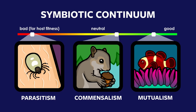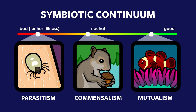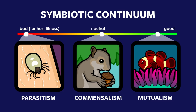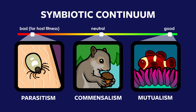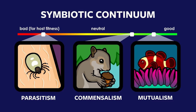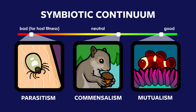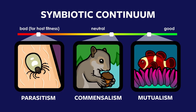It might seem silly that biologists invented a word — symbiosis — to encompass everything from parasites to cooperators, but the reason for this is that parasites can evolve to become cooperators, and vice versa. Understanding these evolutionary transitions is fascinating, but more importantly, this knowledge is now helping us control diseases.